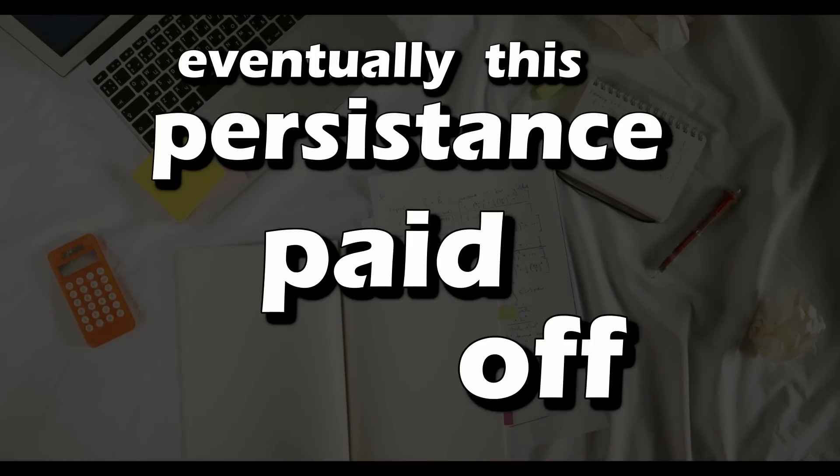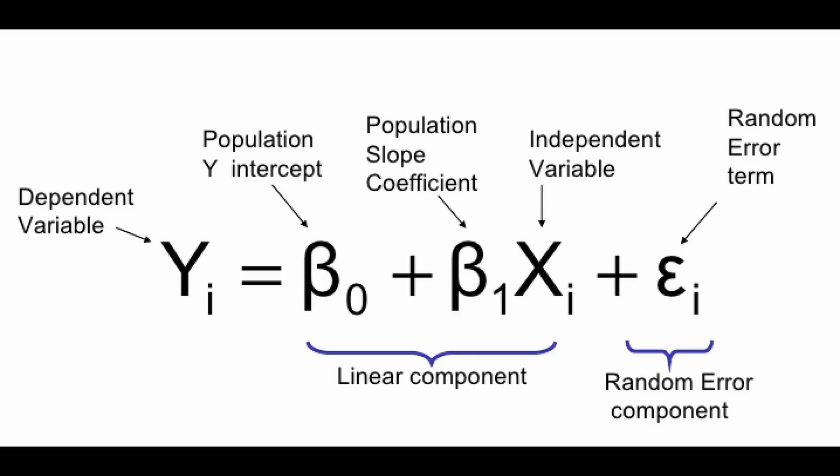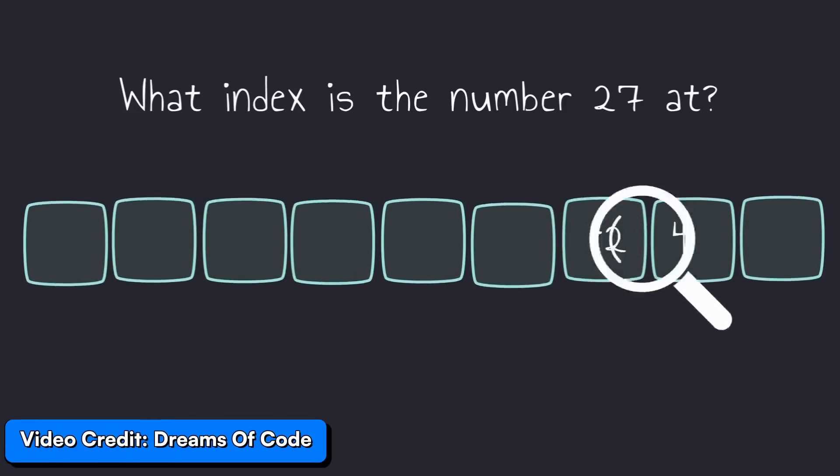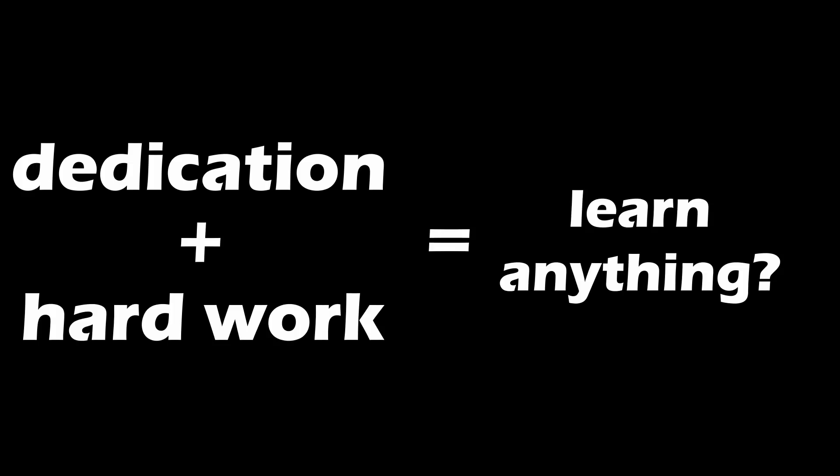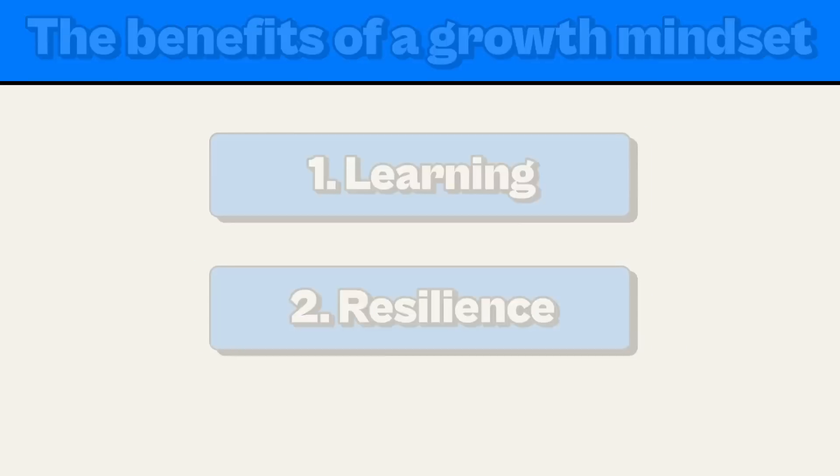And eventually, this persistence paid off. My skills improved. I finally understood some concepts. I could actually do the math. I knew the reasoning behind these algorithms. And the experience taught me that with dedication and hard work, anyone can learn and adapt. Anyone can code. Now, before we move on to the second benefit, let me share a resource that'll help you learn like a champion, and that resource is today's sponsor, Brilliant.